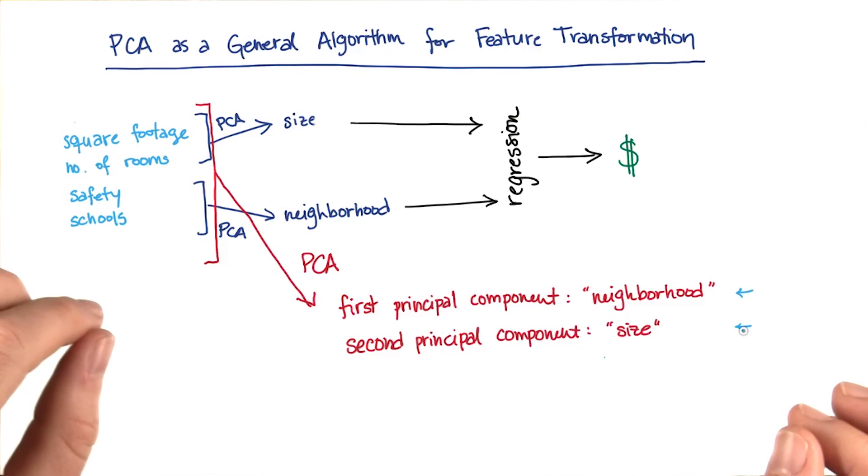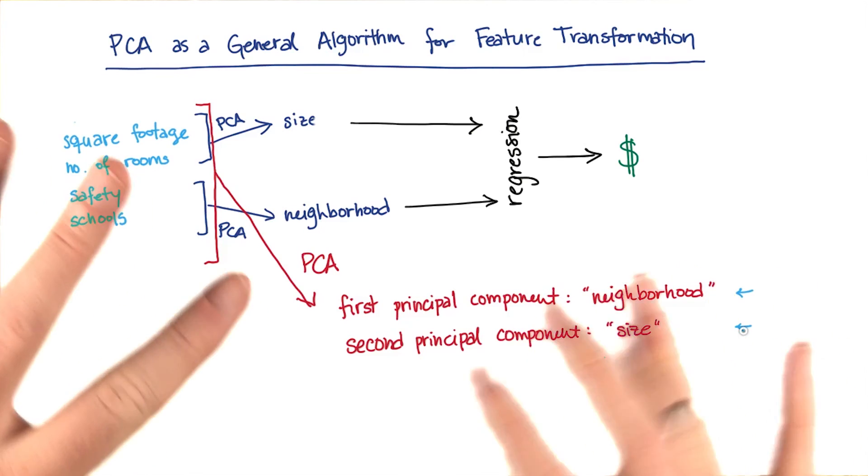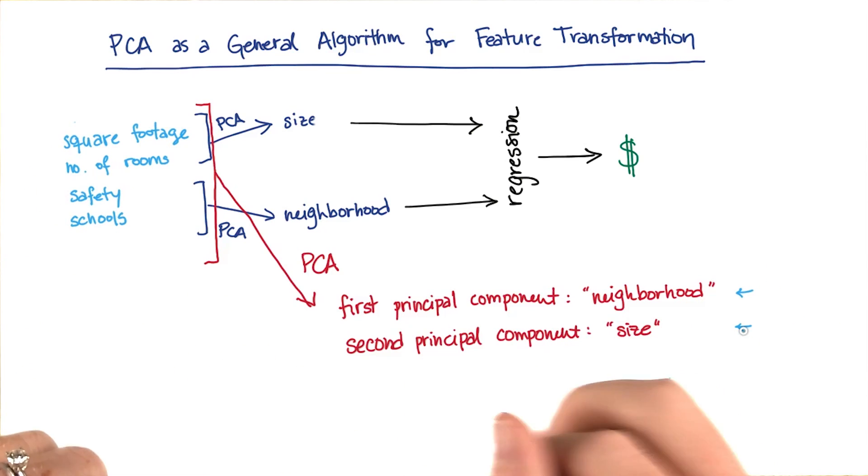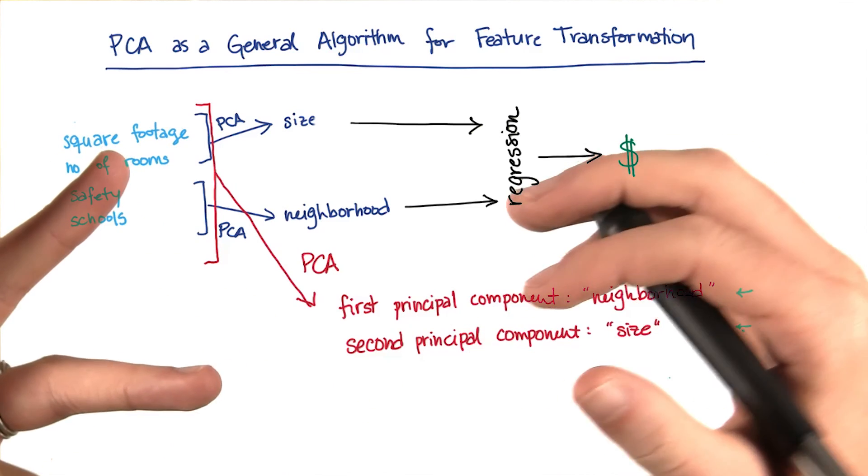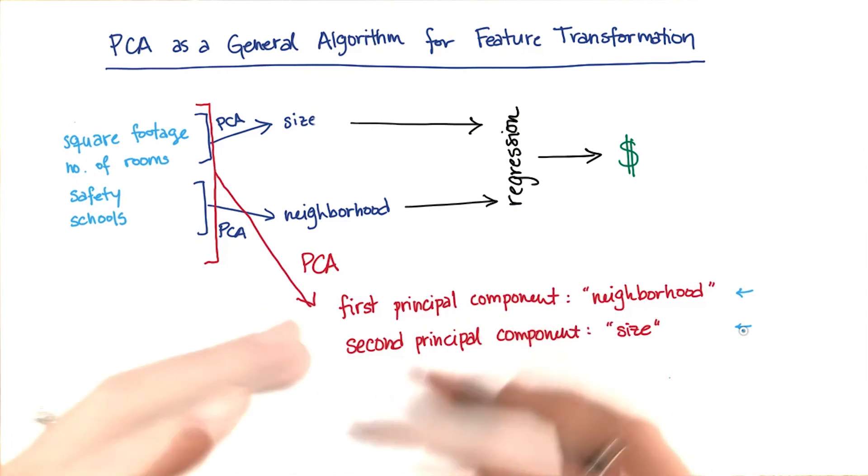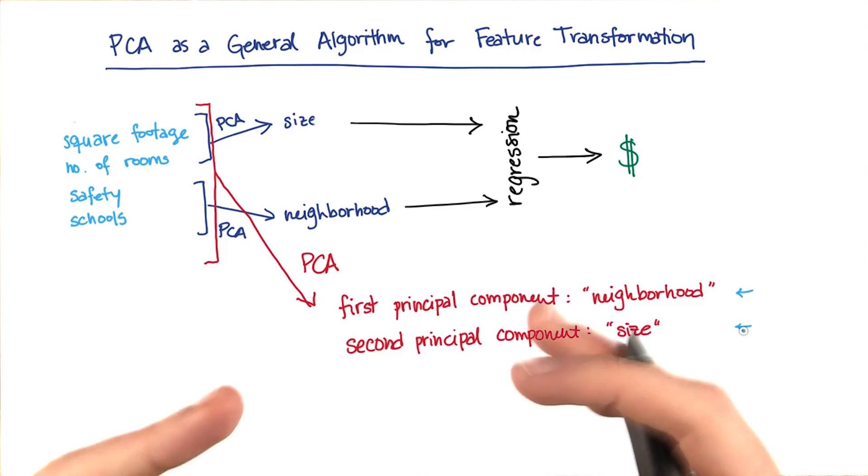If you knew nothing about housing prices at all, PCA would still be able to give you an insight like there are two things that seem to drive house prices in general. It would still be up to you to figure out that they're the neighborhood and the size. But in addition to doing dimensionality reduction now, you're also learning something fundamentally important about the patterns of variation in your data.